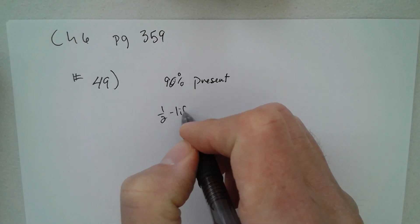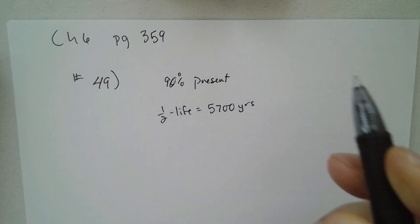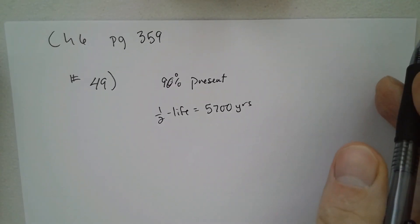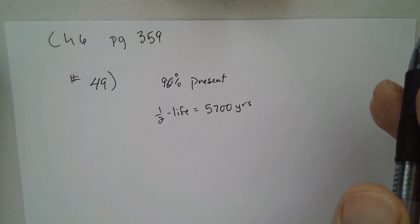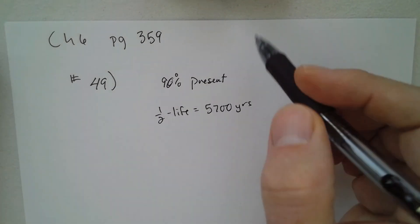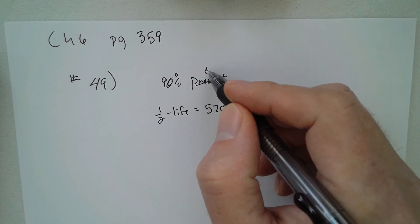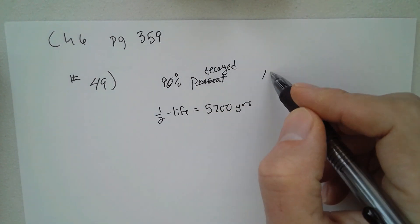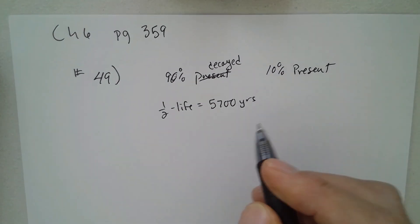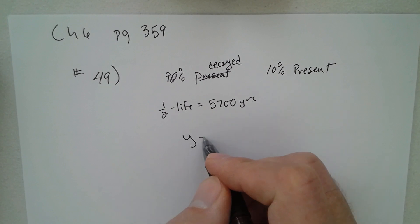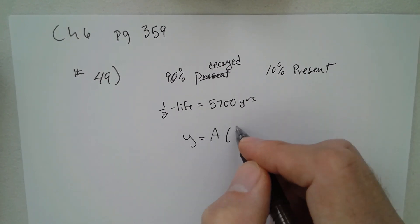The half-life of carbon-14 is 5,700 years for this problem, so we can use the half-life formula. So 90% has been decayed, actually, so actually 10% present. The half-life formula is y equals A times one-half to the t over the half-life.